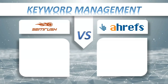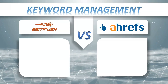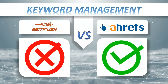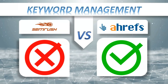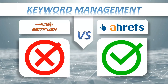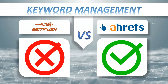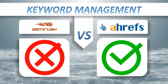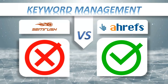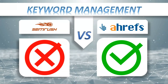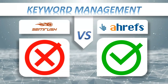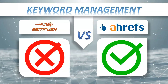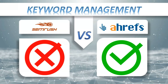Keyword management. SEMrush — doesn't have it. Ahrefs — has it. Keyword management is an innovative and multi-phased approach to discovering, analyzing, grouping, and organizing large numbers of keywords with the objective of prioritizing, collaborating, and acting on keyword data to build and optimize your PPC and SEO research marketing campaigns.